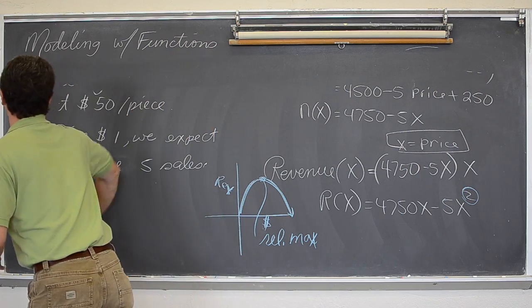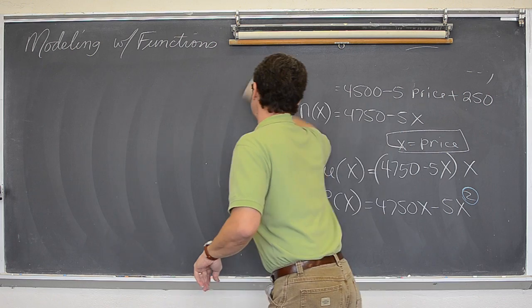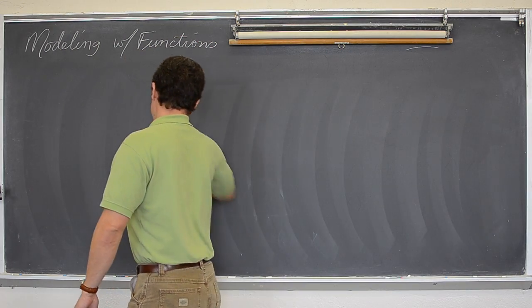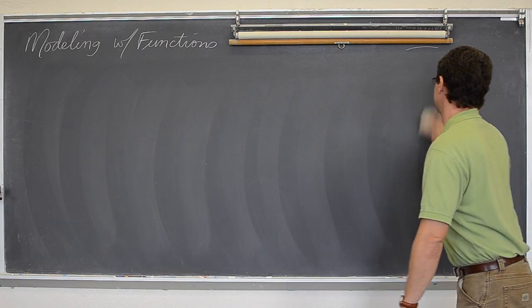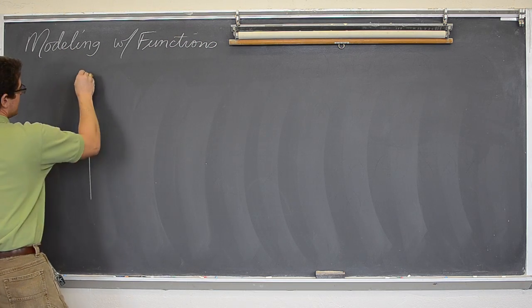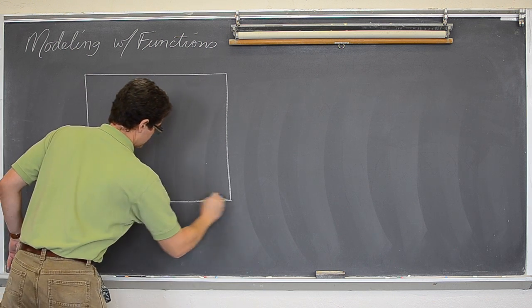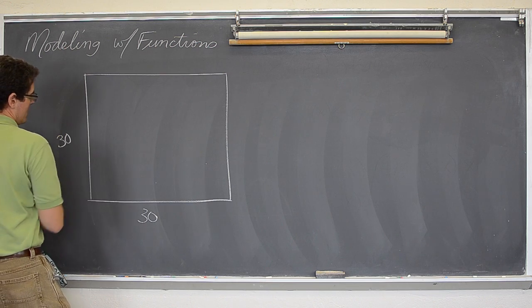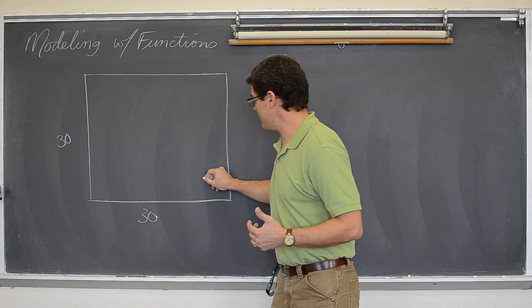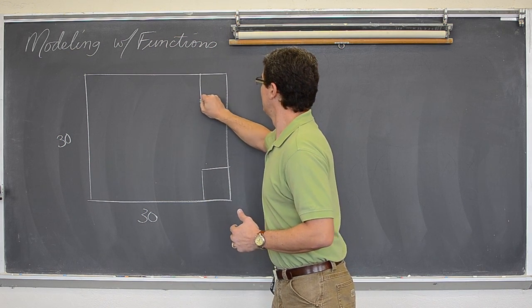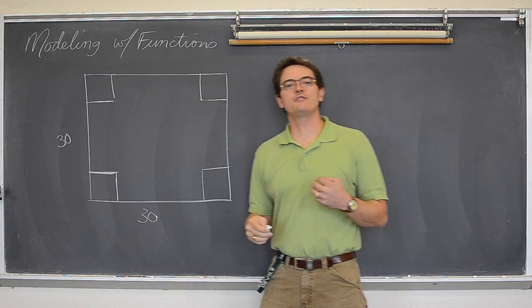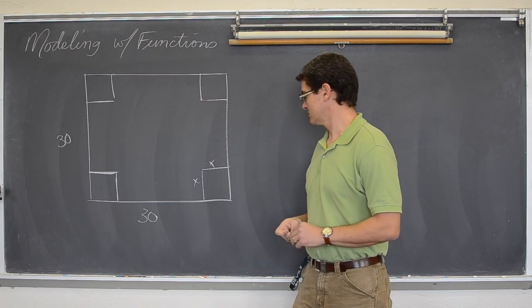Ok, so let me see if I can get another example done before we get out of here. Ok, let's say that I want to build a box. And the box I am going to build is going to be an open box. I am going to use a piece of cardboard that is thirty by thirty. And how am I going to make this box? Well, I am going to cut corners out of it.